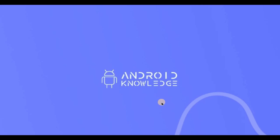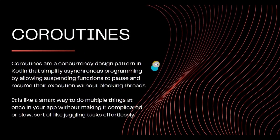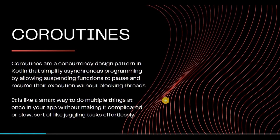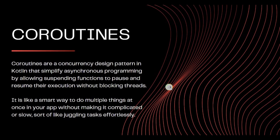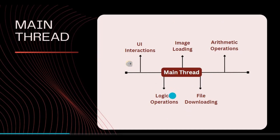First, let's see what are coroutines. Coroutines are a concurrency design pattern that allow for sequential execution of tasks in a non-blocking manner. In very simple language, coroutines manage multitasking very well by dividing its processes into multiple threads. A thread is like a pipeline where all the processes take place — such as UI interaction, image loading, and file downloading.